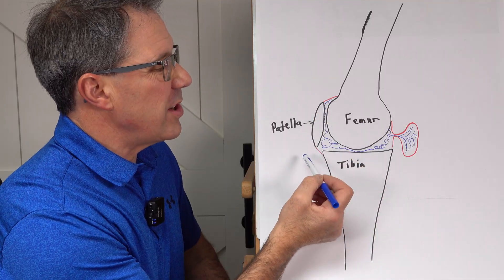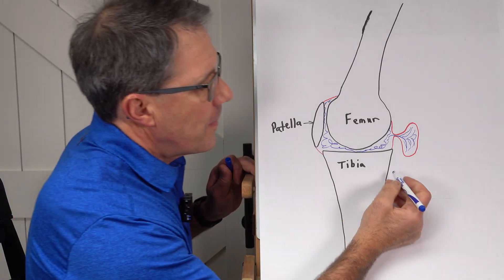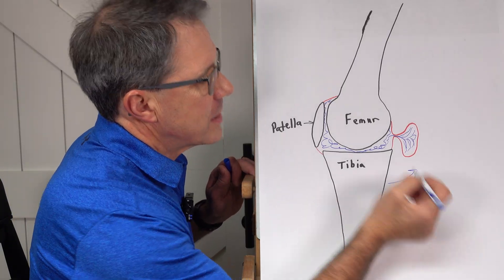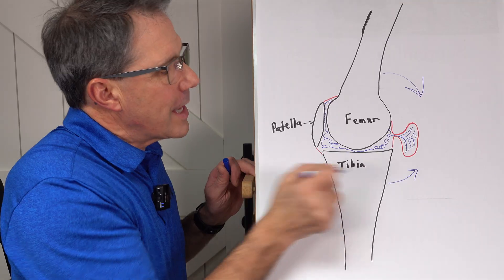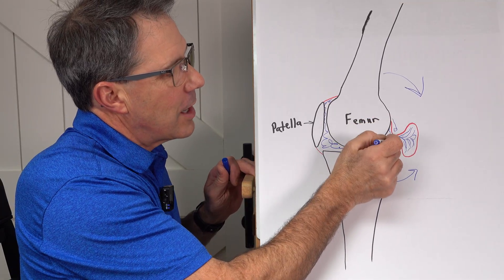So you might feel the swelling back here. Maybe you feel some swelling around the front of your knee. You can't bend it very well because when you bend it and this tibia goes in this direction, this femur goes in that direction. You get this kind of a pinching effect between these bones right here and that can cause an irritation.